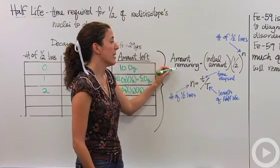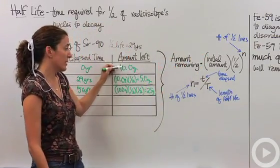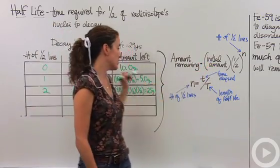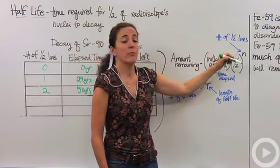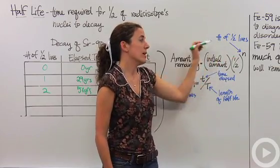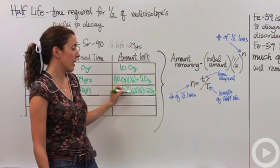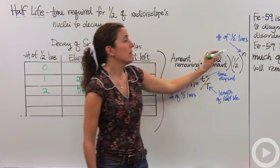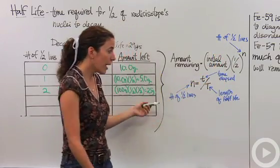The formula basically says the amount remaining, how much we have, is equal to the initial amount, which is what we did, 10, times one half to the nth power. So the n is the number of half-lives we went through. So the first half-life had one, the second half-life we had one half times two, which is squared. So the number of half-lives is n.